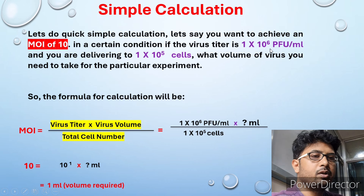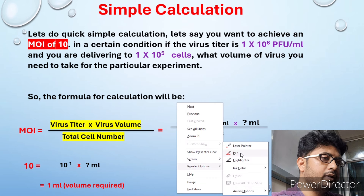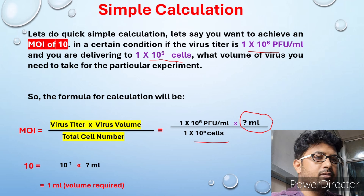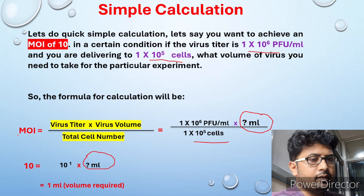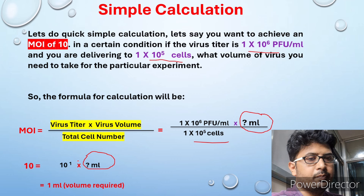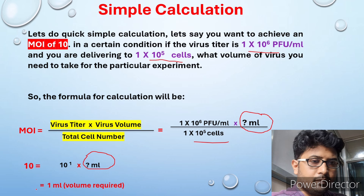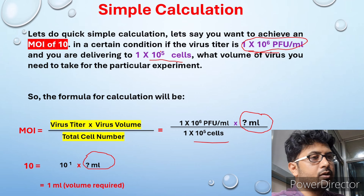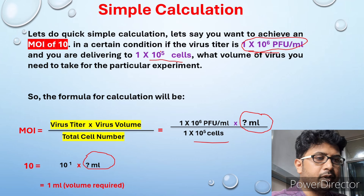The formula is: MOI = virus titer × virus volume ÷ total cell number. The virus titer is 1×10⁶ PFU/mL, multiplied by X mL of volume (which we need to find), divided by 1×10⁵ cells. Dividing 10⁶ by 10⁵ gives 10¹. Since the target MOI is 10, which equals 10¹, solving for X gives 1 mL. So you need 1 mL from the stock to achieve the desired MOI for that number of cells. If you change the values, the calculation changes accordingly.